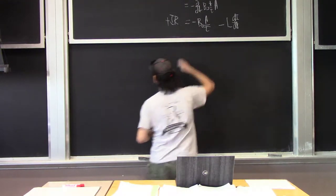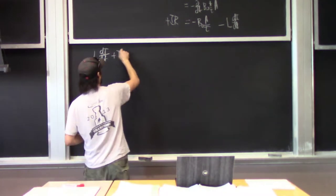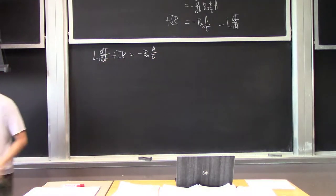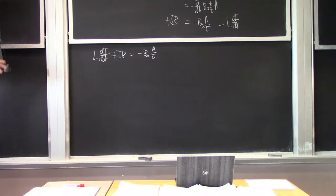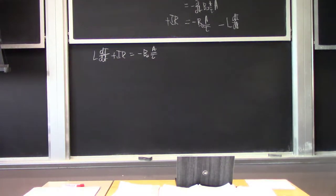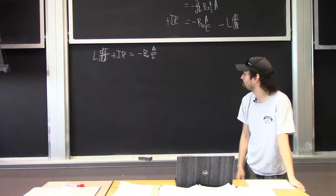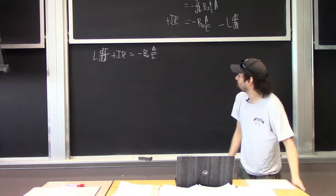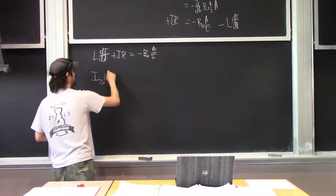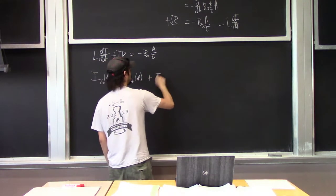Putting this in standard form by moving terms over, we get: L di/dt + IR = −B0 * A / tau. This is that standard first-order linear inhomogeneous differential equation. To solve it, the general solution I(t) equals the homogeneous solution plus the particular solution.